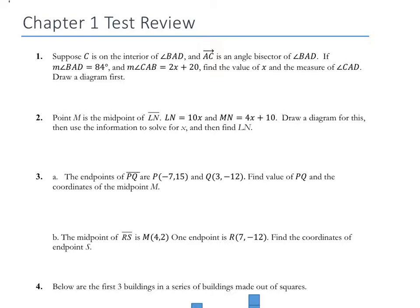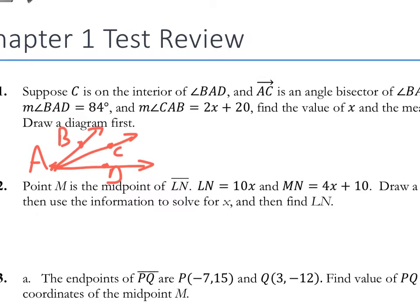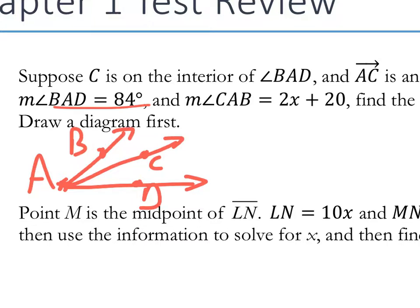One thing we talked about was angles. We've got angle BAD and ray AC, which is an angle bisector. We want to draw a diagram first. Remember, the middle letter in an angle is the vertex. We've got AC as the angle bisector. Now we know that BAD is 84 degrees and CAB is 2x plus 20.